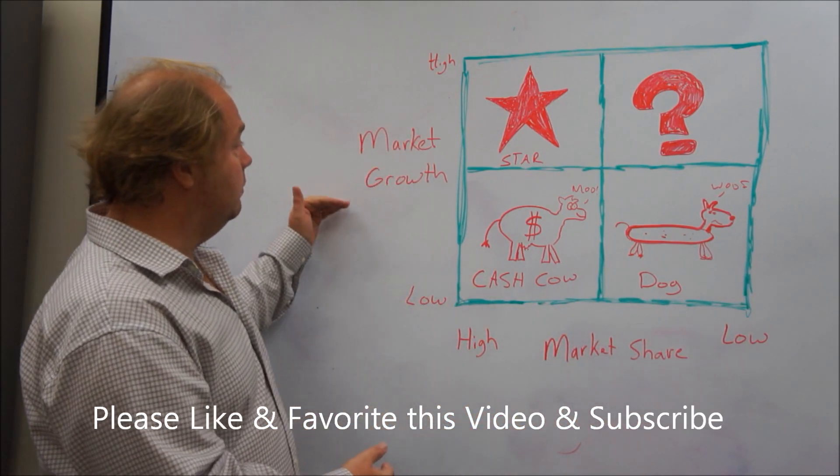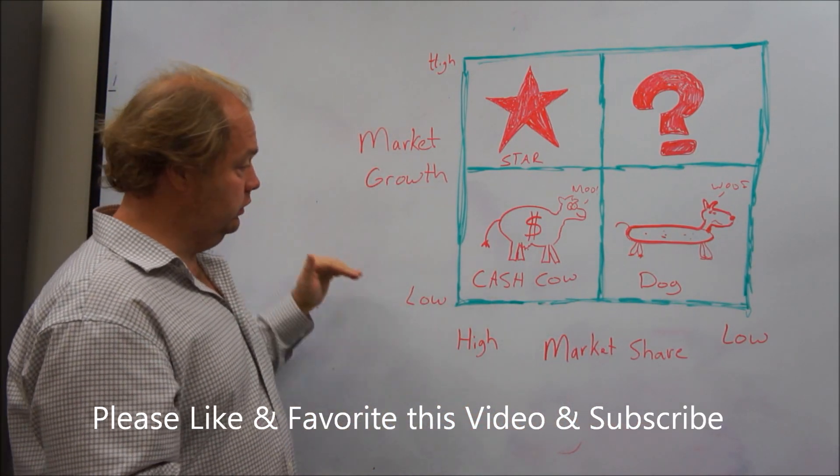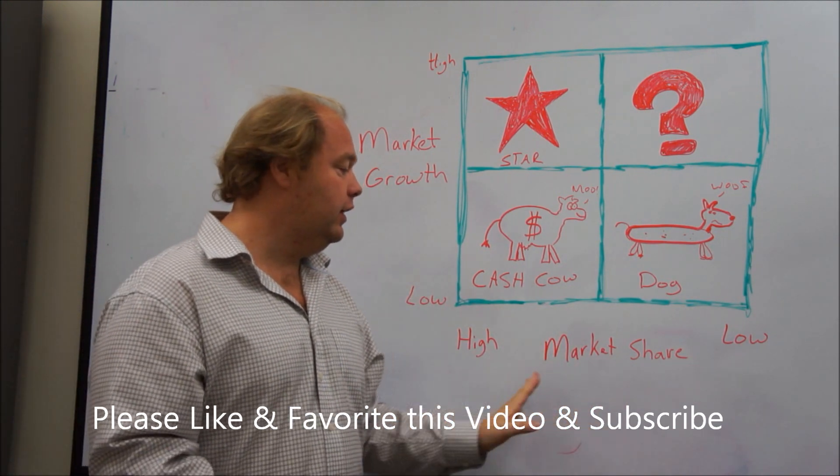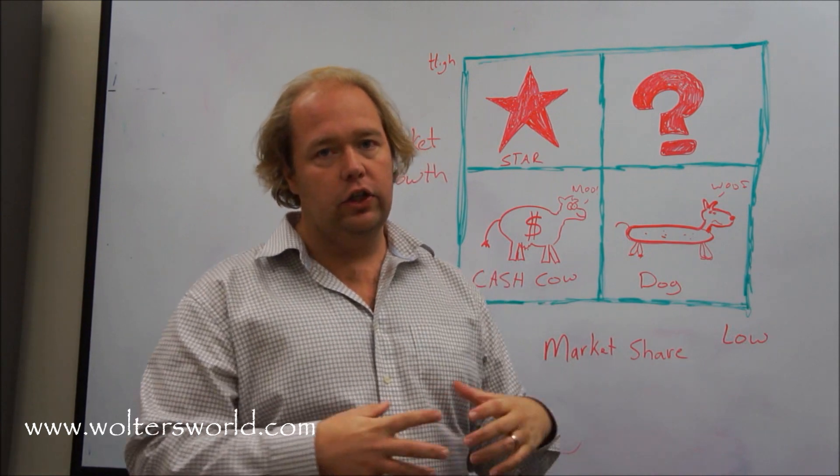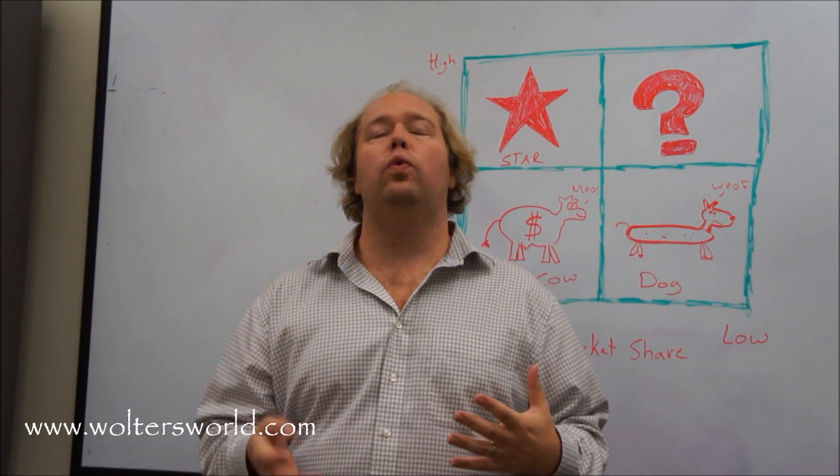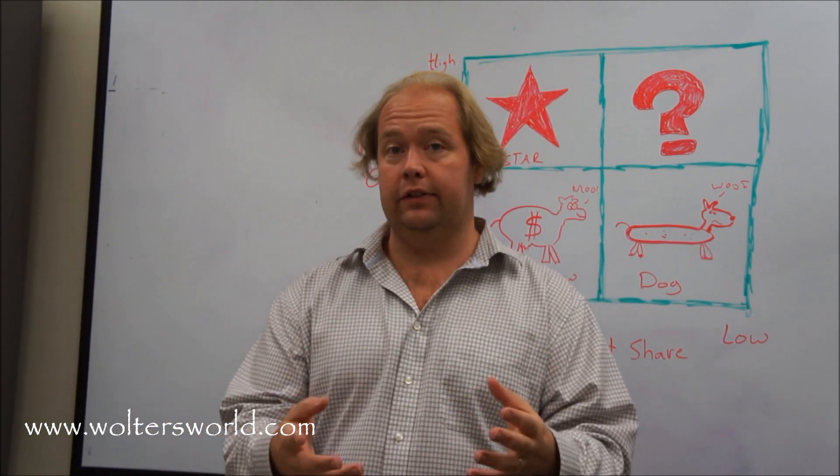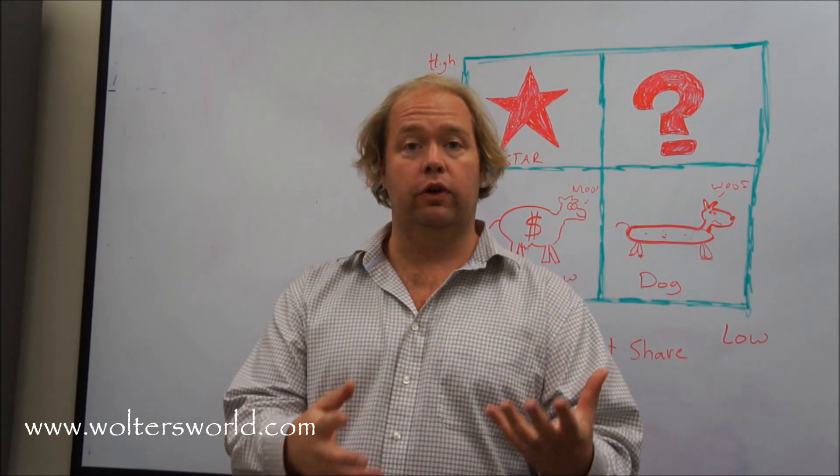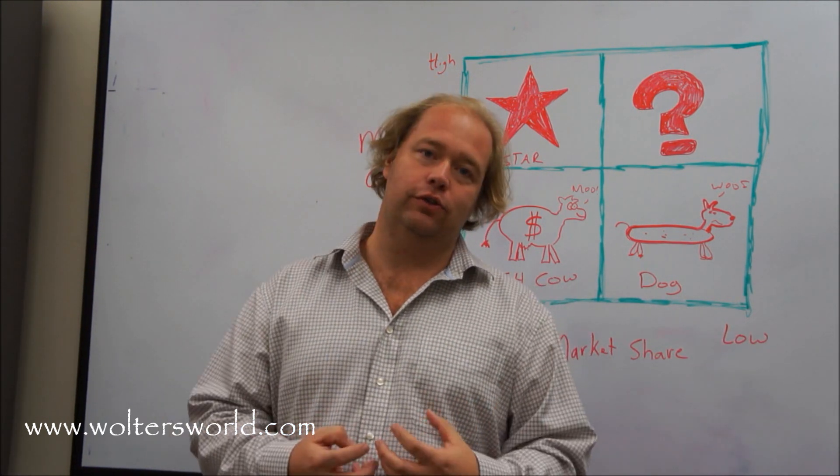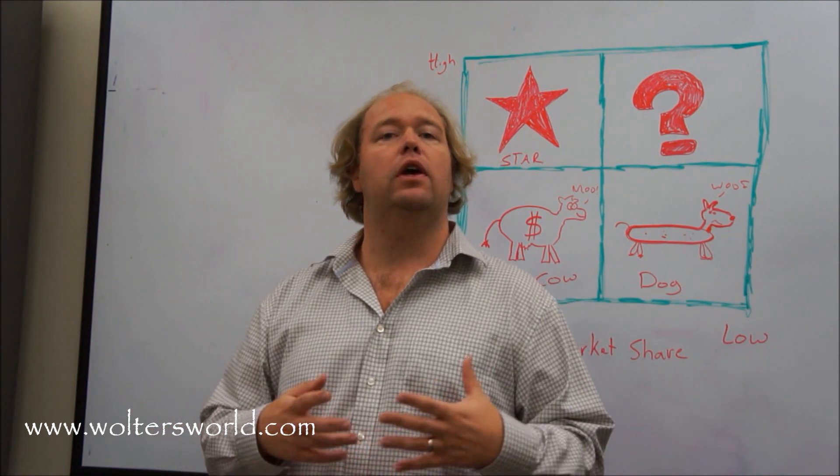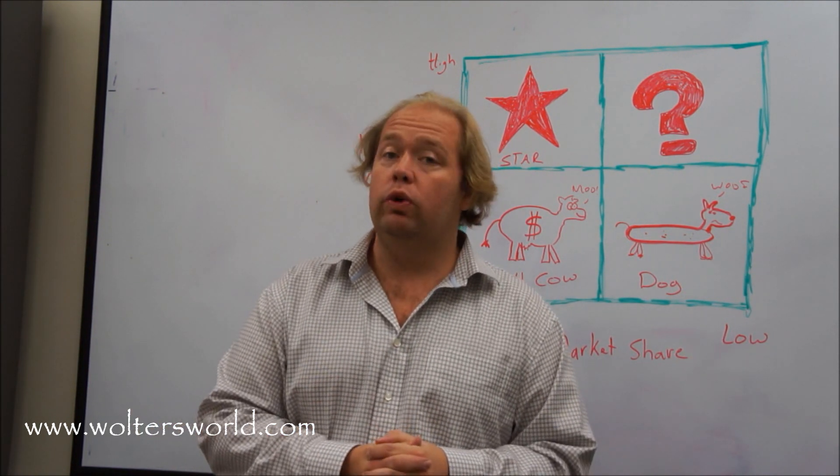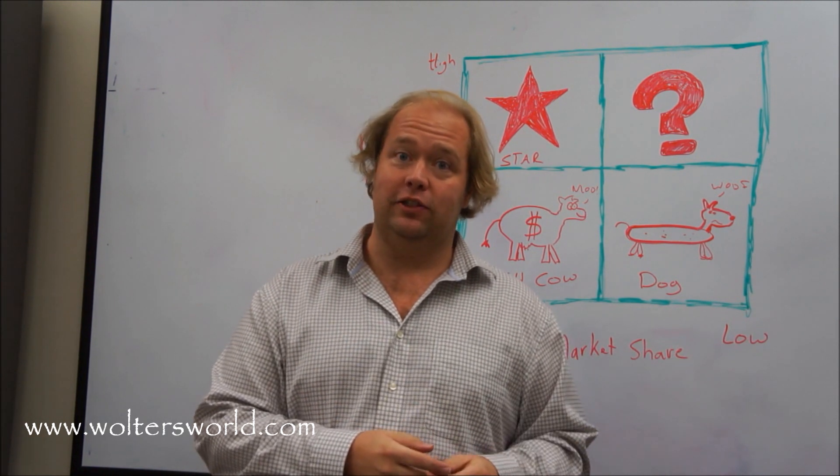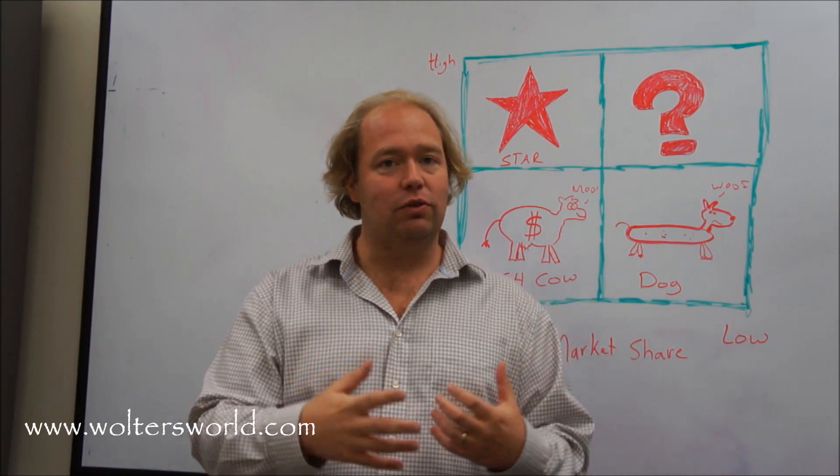So we have the quadrants here: market growth, high market growth, low market growth, and market share, high market share to low market share. Now, the thing is, you do this to analyze which products we should put more money into, invest more because things are going well, which ones are our cash cows that we use to fund other investments, and when we're in bad economic times, maybe this is how we decide which products need to be taken out to pasture.